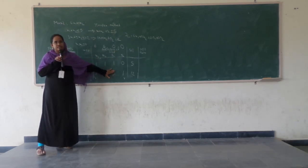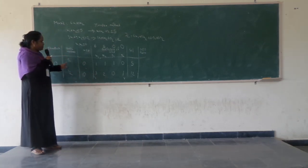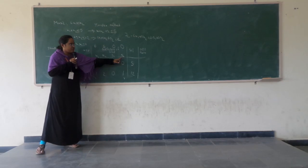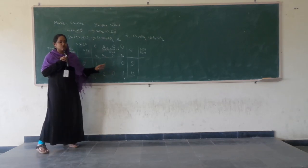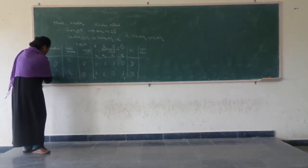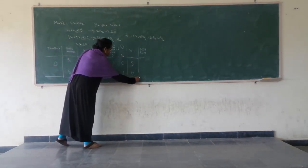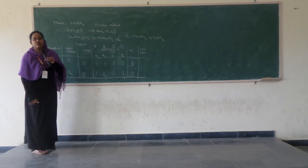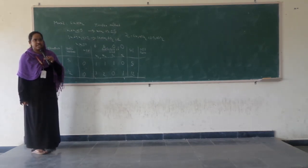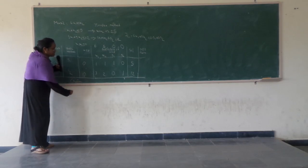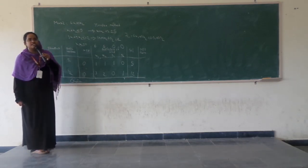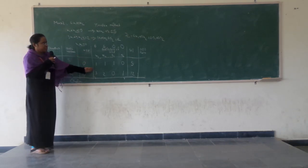One important observation: whatever the basic variables are, their corresponding columns must form an identity matrix for the solution to be correct. Here the basic variables are s1 and s2, and their columns are [1, 0] and [0, 1] — so they are in identity matrix form and our format is correct. The next step is to calculate the Cj minus Zj values.